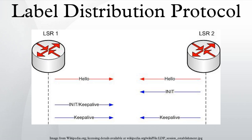Label Distribution Protocol is a protocol in which routers capable of multi-protocol label switching exchange label mapping information. Two routers with an established session are called LDP peers, and the exchange of information is bi-directional. LDP is used to build and maintain LSP databases that are used to forward traffic through MPLS networks.